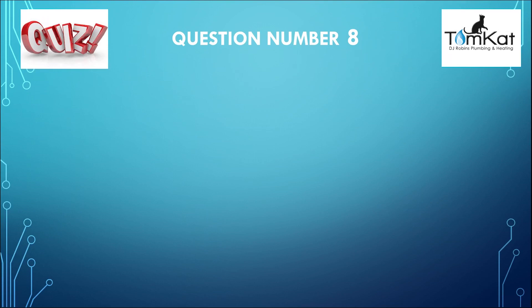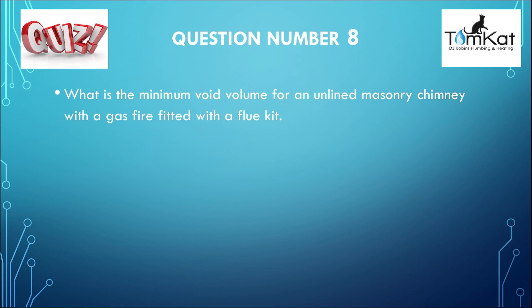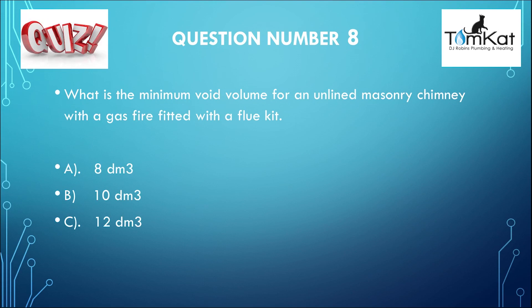Question number eight: What is the minimum void volume for an unlined masonry chimney with a gas fire fitted with a flue kit? Is it A, 8 decimetres cubed? Is it B, 10 decimetres cubed? Or finally, is it C, 12 decimetres cubed? That is the end of question number eight.